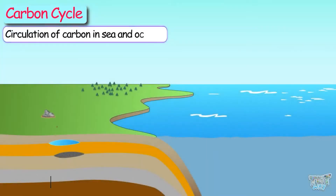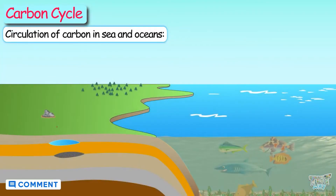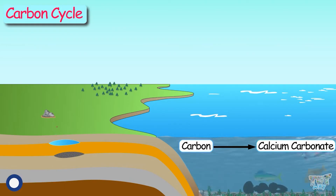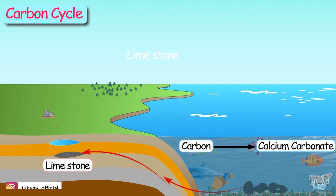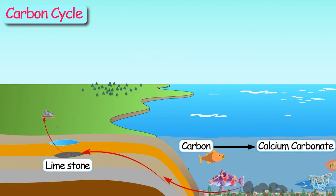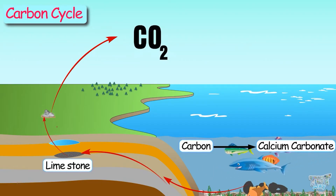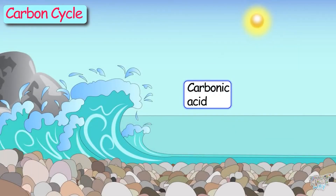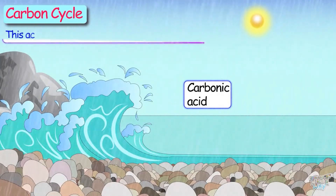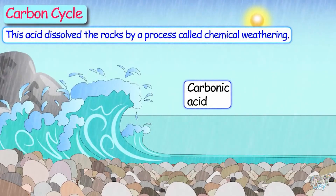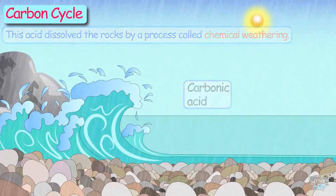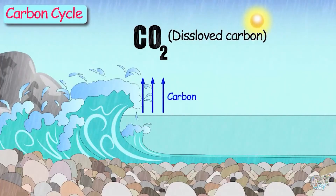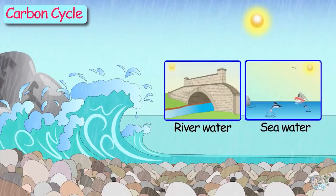Now let's have a look at the circulation of carbon in the sea and oceans. Aquatic life converts some of the carbon in their diet into calcium carbonate, which is used to make their shells. These shells eventually form a type of stone called limestone. When these stones are brought to the surface of the earth, they release carbon back into the atmosphere. Atmospheric carbon also combines with water to form carbonic acid, and this acid, when it falls on the surface of rocks, dissolves the rocks by a process called chemical weathering. Carbon is then released back into the atmosphere as carbon dioxide gas and also as dissolved carbon, which finds its way back into river water and ultimately seawater.